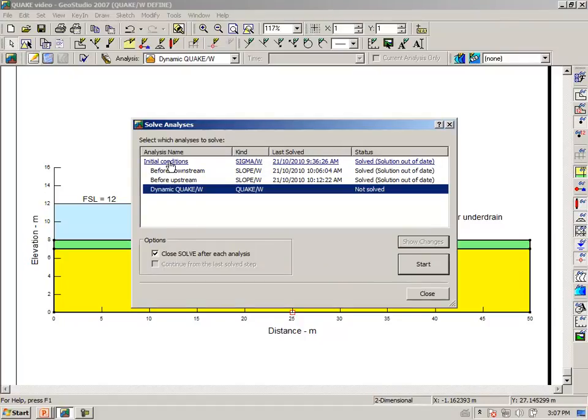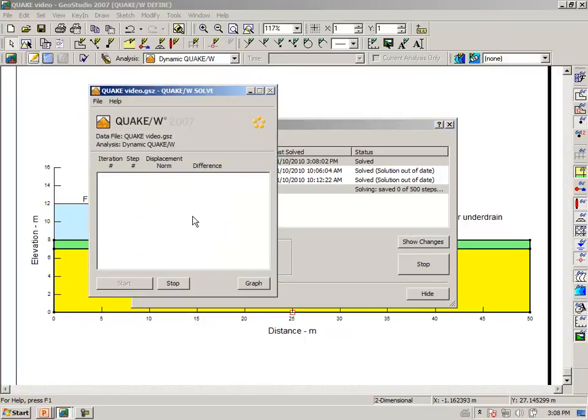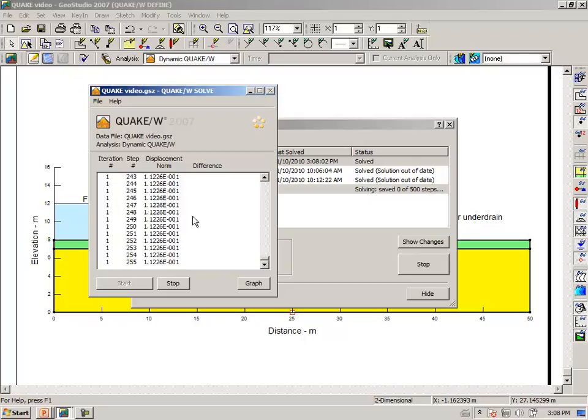Just to make sure, we should also recompute at this stage our initial conditions. So if I hold down the Control key, I can recompute my initial conditions, and then I will compute the Quake W dynamic analysis. Clicking on Start then, it recomputes the initial conditions, and now we are computing and solving for the dynamic analysis. So we've gone through the earthquake record once, now we're on the earthquake record the second time, the third time, and now the fourth time.